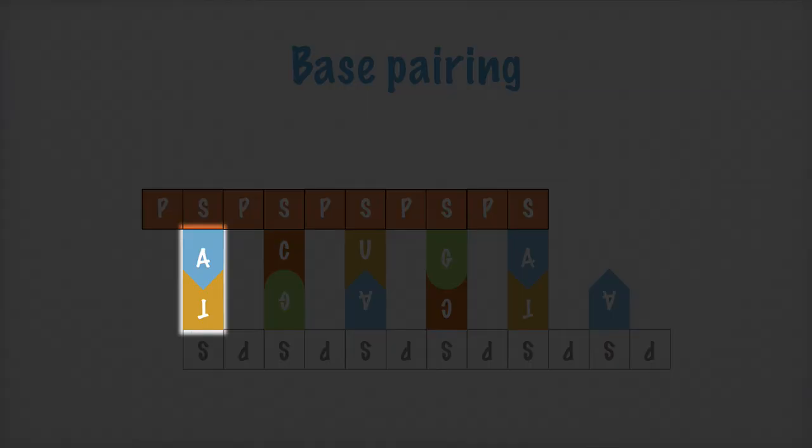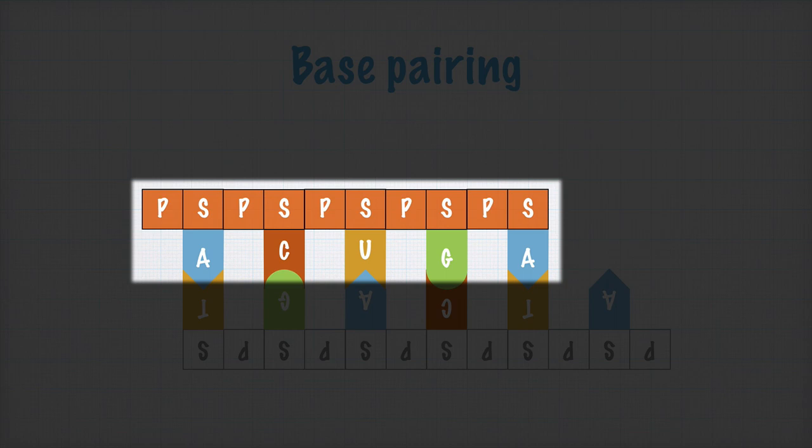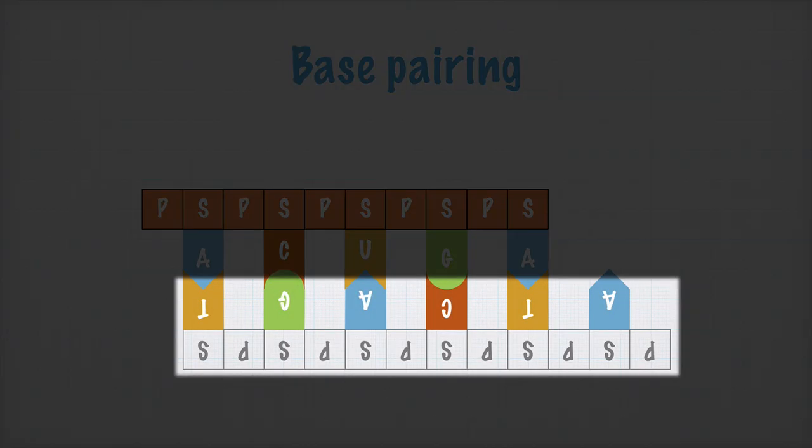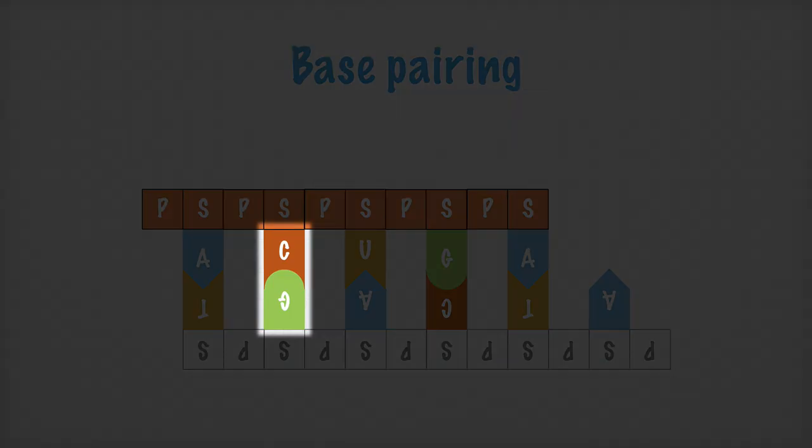For example, here a T in the DNA molecule always base pairs with an A in an RNA molecule. Yeah, this is supposed to be an RNA molecule here, I made it with a different color to show this. Down here we have the part of the DNA that has been opened up in the transcription bubble. Also, if we have a G here in the DNA molecule, it always base pairs with C in the RNA molecule.